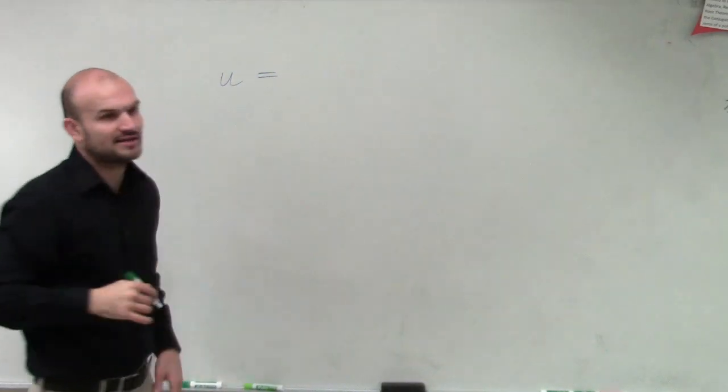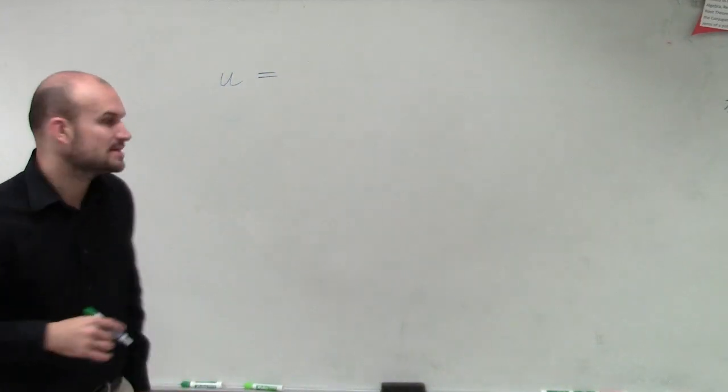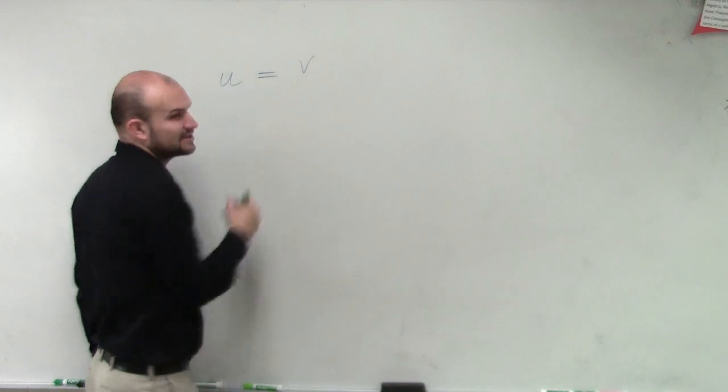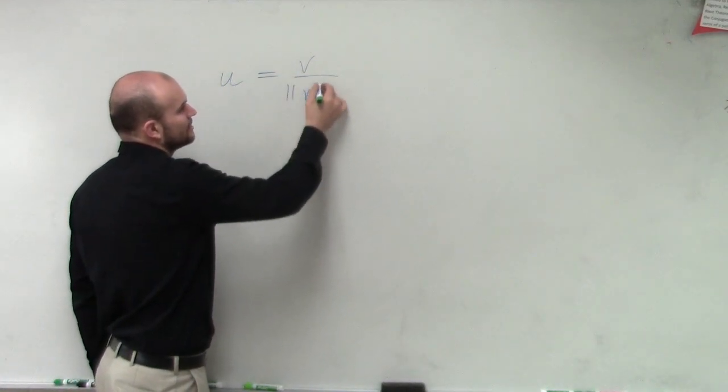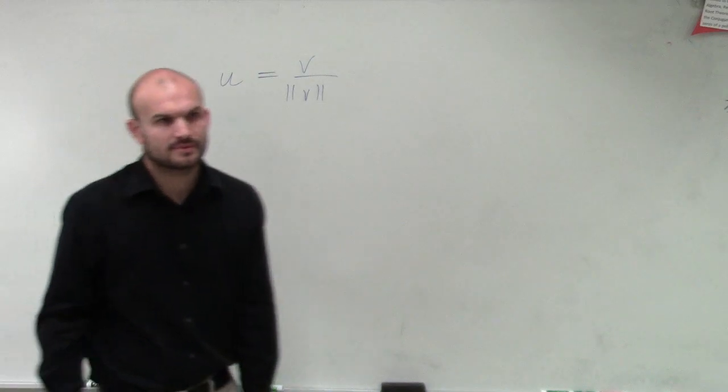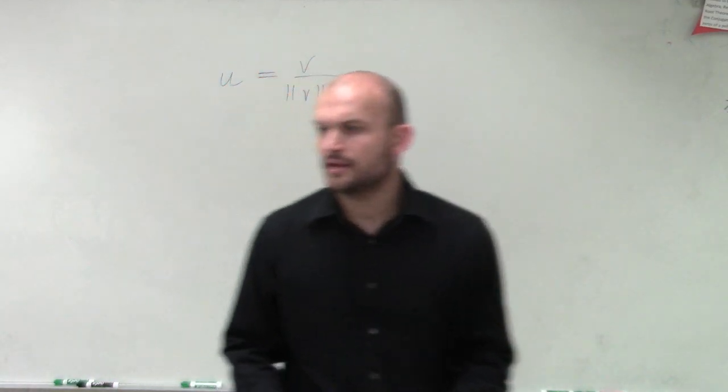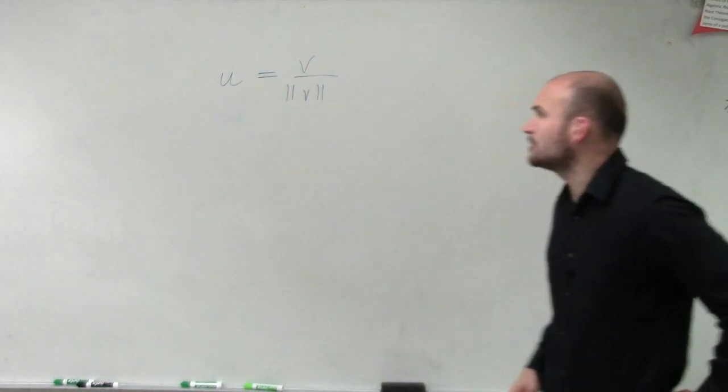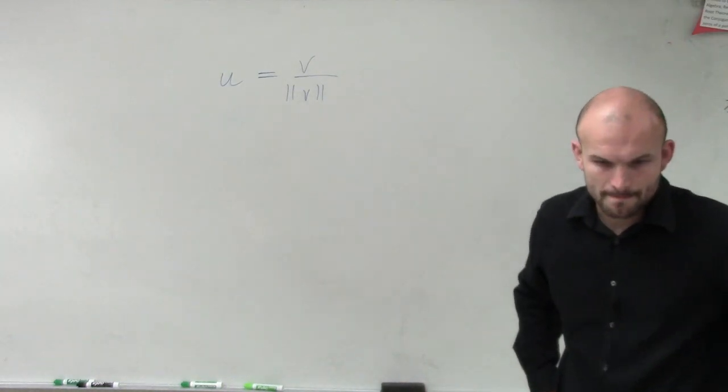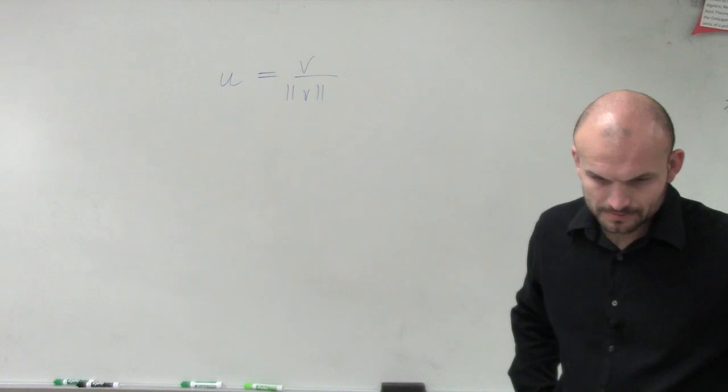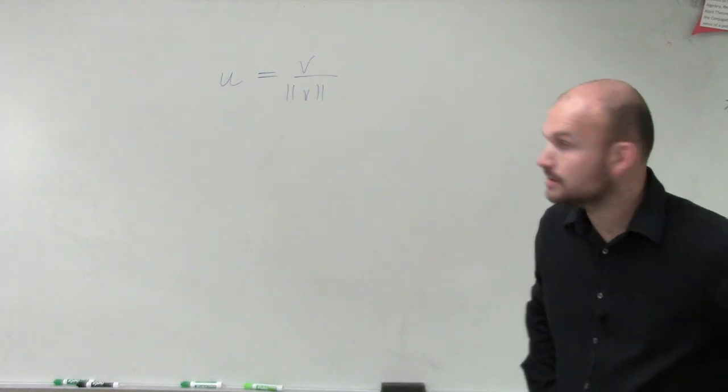Now to find the unit vector when given a vector, what we're simply going to do is take our vector and divide it by the magnitude of that vector. So you might want to look at this and say, so vector u and the vector v are two different things? Yes.